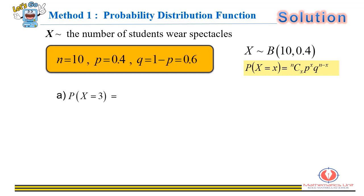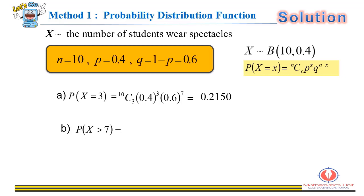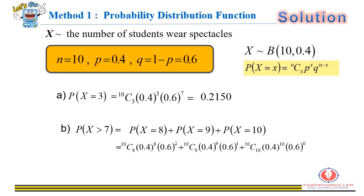Using the probability distribution function formula: for part (a), P(x = 3) — substituting the corresponding values — we get 0.2150. For part (b), P(x > 7) equals the sum of P(x = 8) + P(x = 9) + P(x = 10). Substituting into the formula again gives a probability of 0.0123.